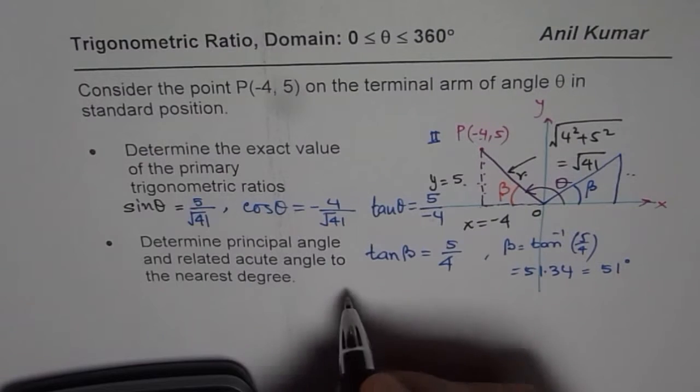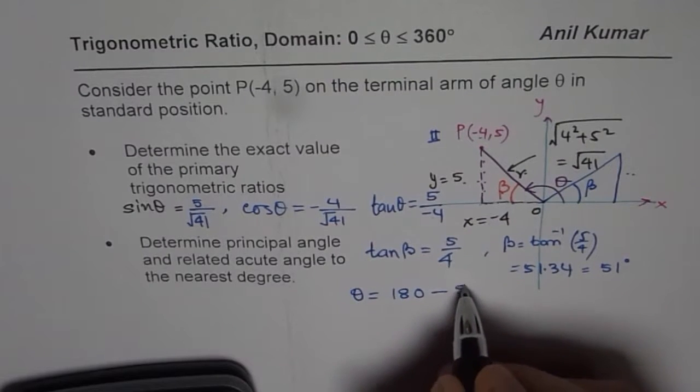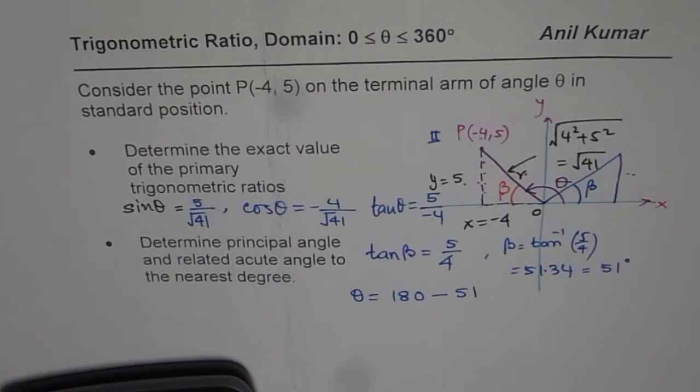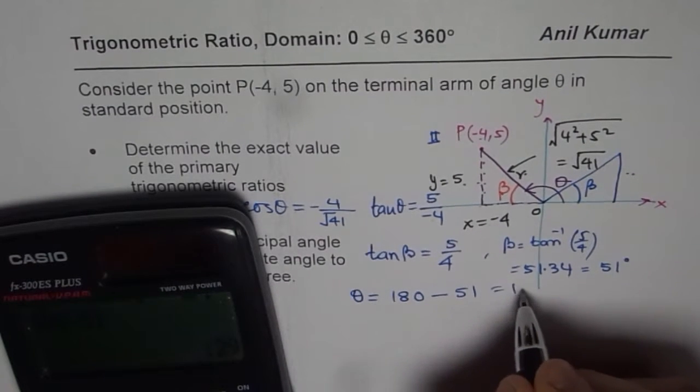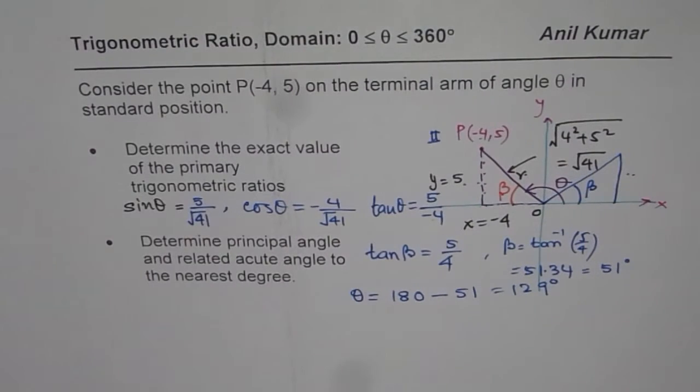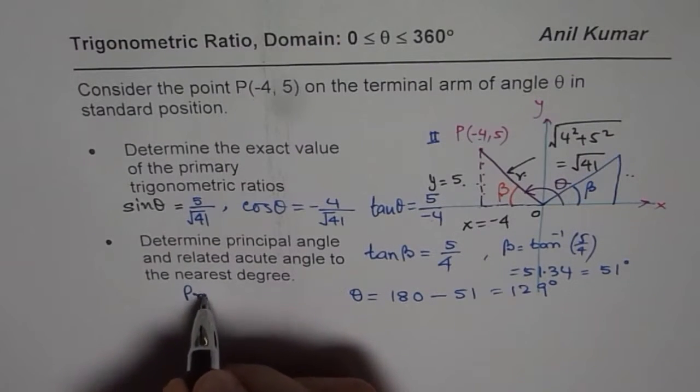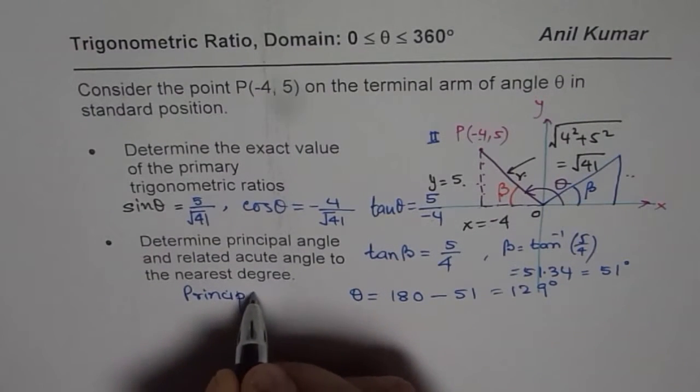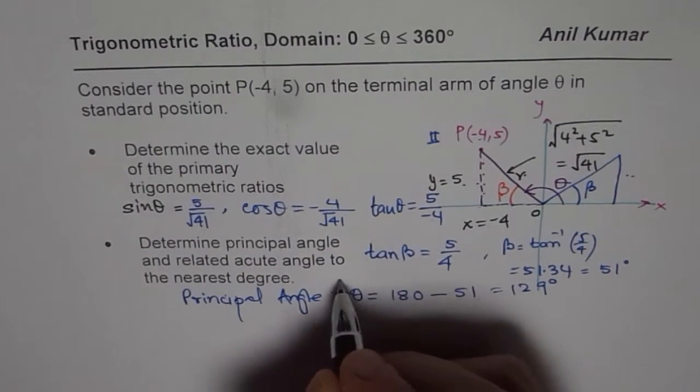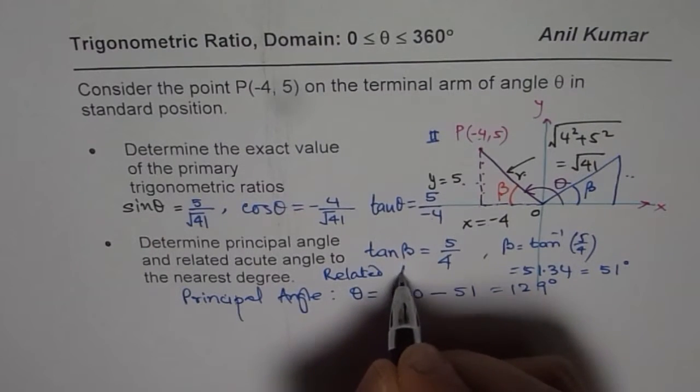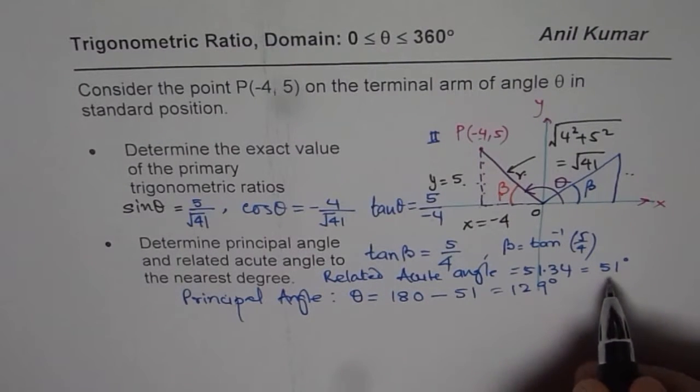The principal angle will be, let's say theta is the principal angle, which will be 180 minus 51. We will do 180 minus 51, which is equal to 129 degrees. The principal angle, which is angle theta for us, is 129. We can write down our answer. The principal angle is theta and acute angle is 51 degrees.